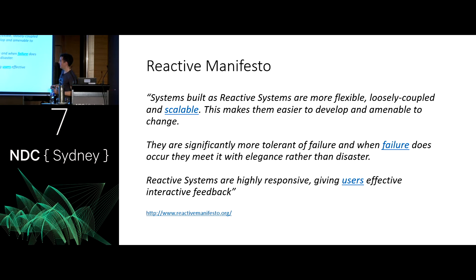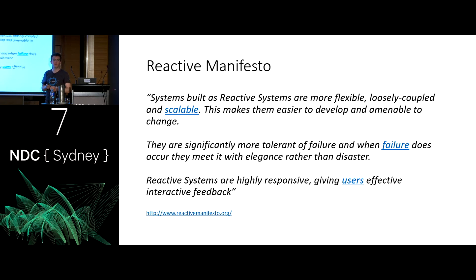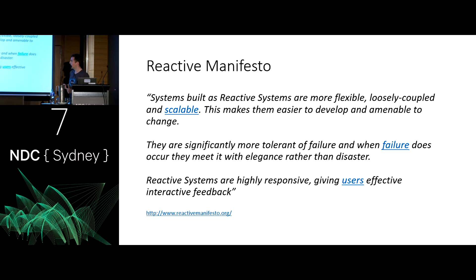As a general guide, there's something called the Reactive Manifesto. Who's heard of this? It's been around since around 2014 and is a fairly short but good set of principles for developing scalable and resilient applications. It's well worth a read. They say systems built as reactive systems are more flexible, loosely coupled and scalable, easier to develop and amenable to change, and significantly more tolerant of failure — and when failure does occur, they meet it with elegance rather than disaster.